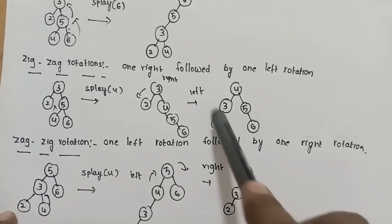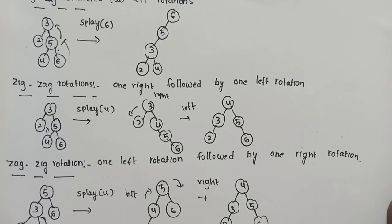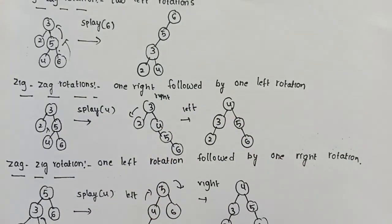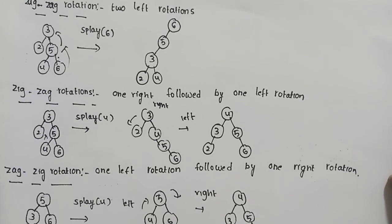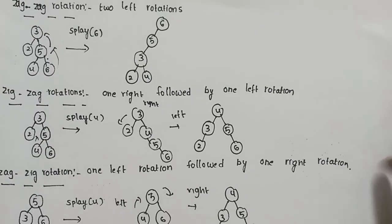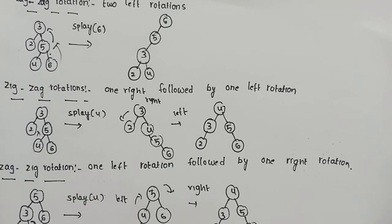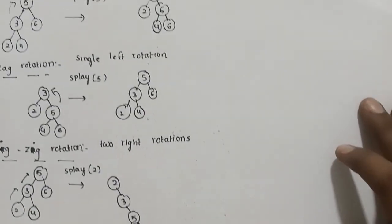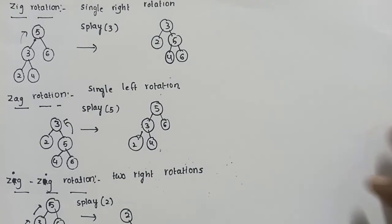In most cases the Splay Tree maintains balance. Some cases may result in a balanced tree and others may not, but the recently accessed element is always moved to the root. This covers the functional aspects of the Splay Tree. Thank you.